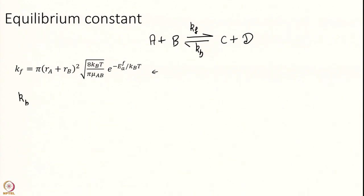But I can also write a backward rate as RC plus RD squared. I do not know what their radii are, they might have changed. When the collision happens, some mass might transfer from A to B and the radii can change. Root 8KT over pi mu_CD e to the power of minus activation energy can also change. Keeping everything as general as I can. And K equilibrium is KF over KB.